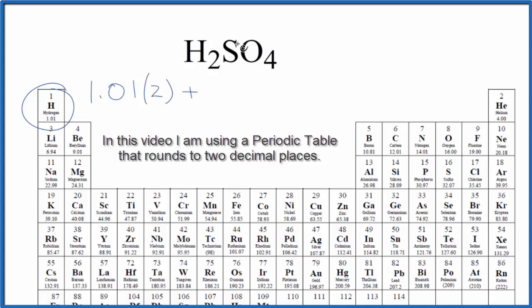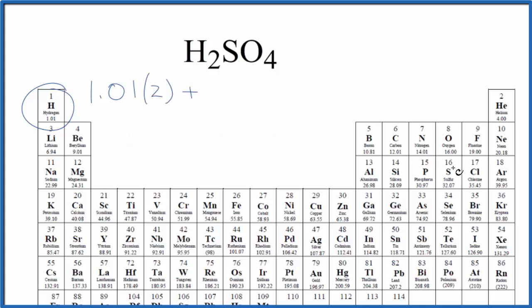Then we add the sulfur. We only have one sulfur, so 32.07 grams per mole. And then we have oxygen, 16.00 grams per mole. We have four oxygen atoms, so we multiply that by four.